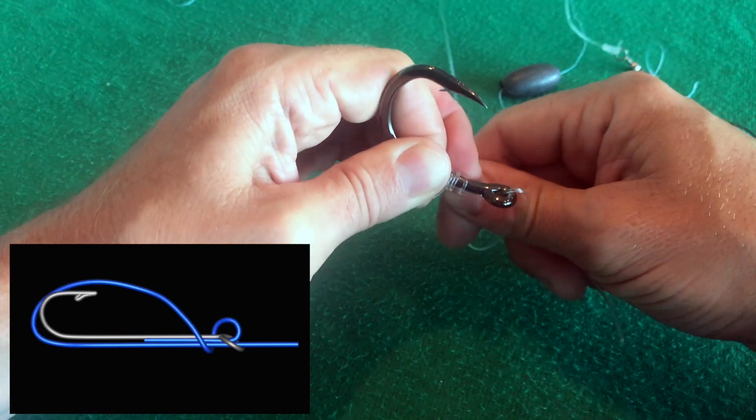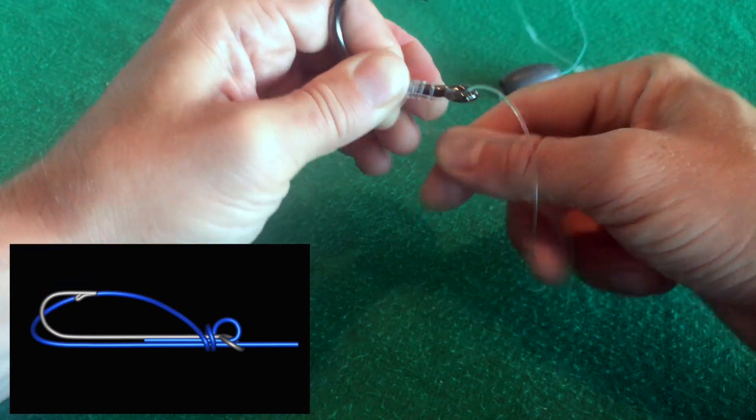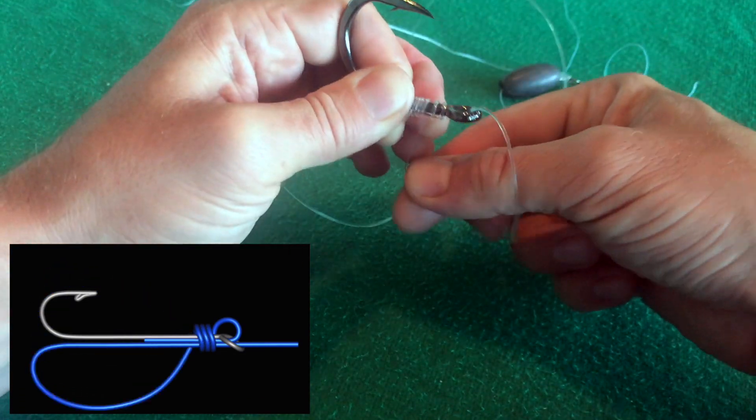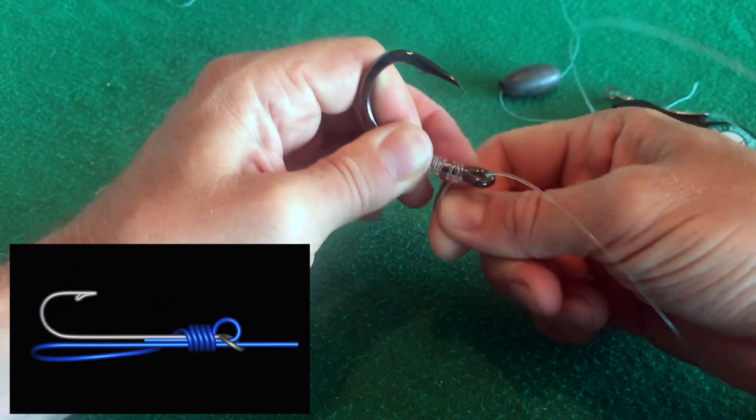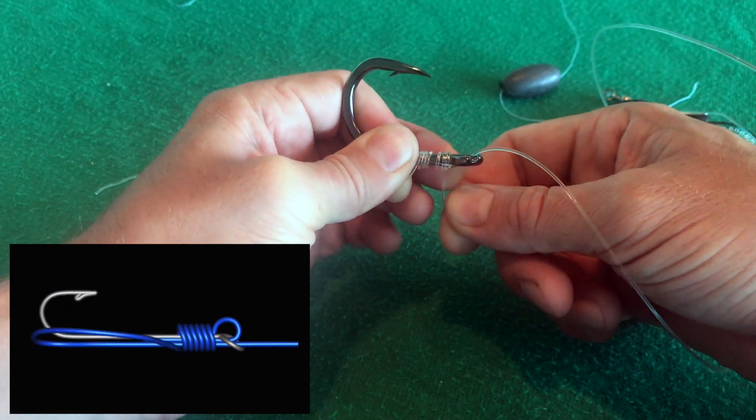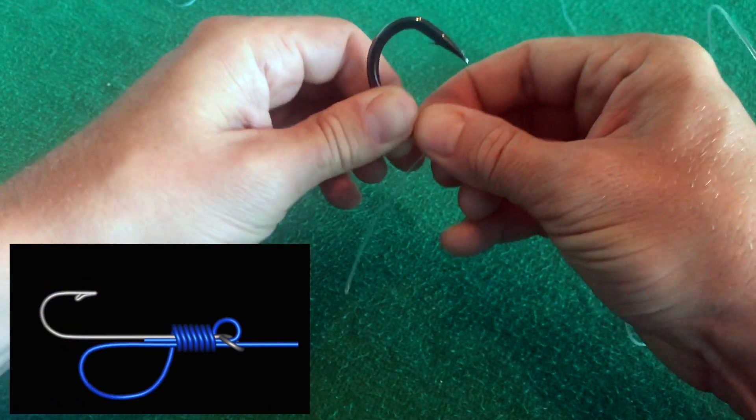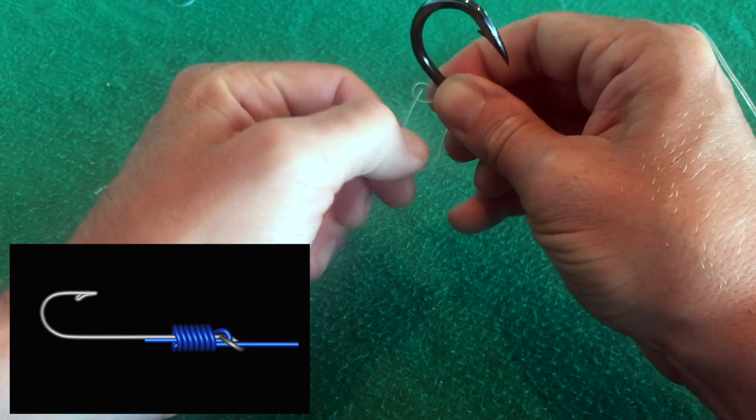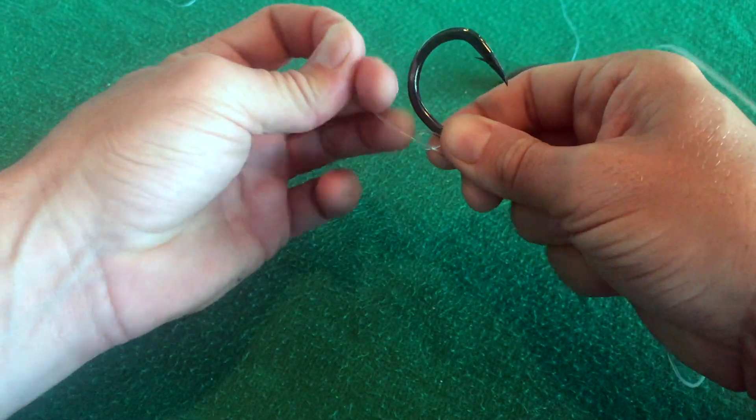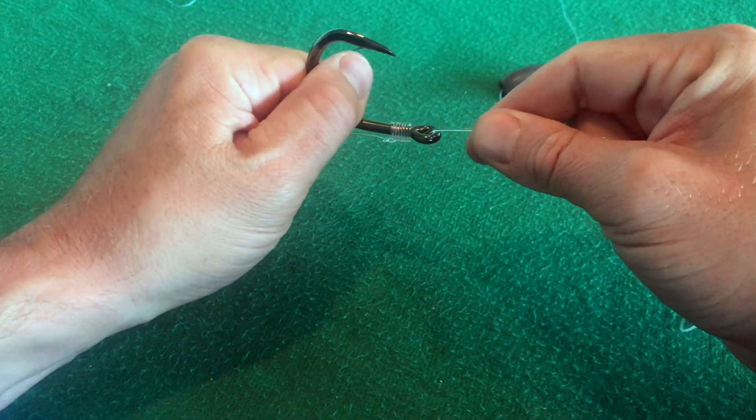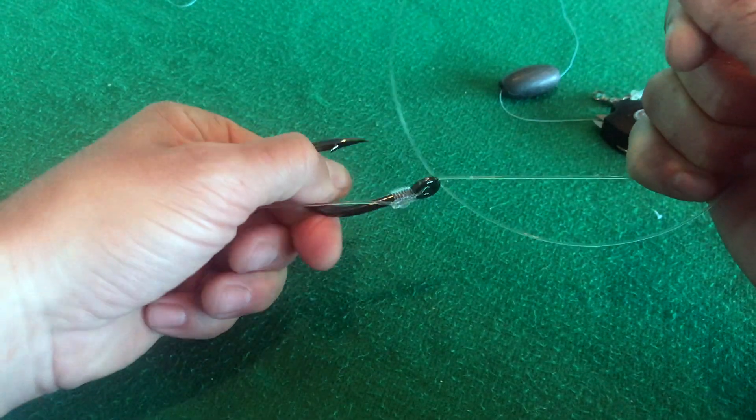So, here we go. We're going to do this simple snell wrap around our hook. And notice how I'm keeping those wraps nice and neat. Transfer all that line. Go back through that loop. And cinch that baby up. Snelled hook.